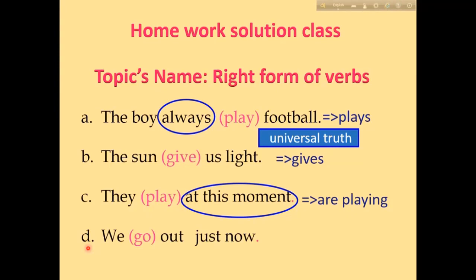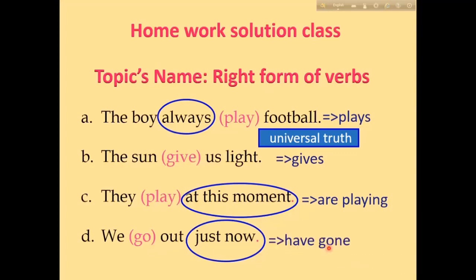Number D: 'We go out just now.' 'Just now' is the key term here. This term is used in present perfect tense. Have/has plus verb 3 is used in present perfect tense. 'Go' is the verb here, so the correct form is 'have gone.'